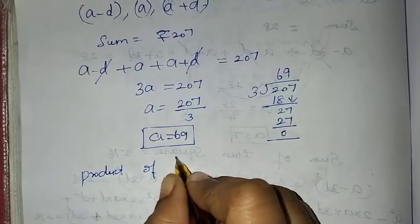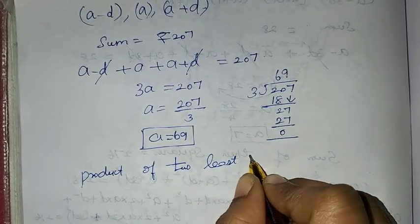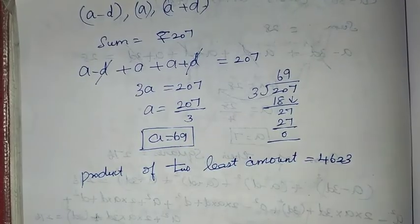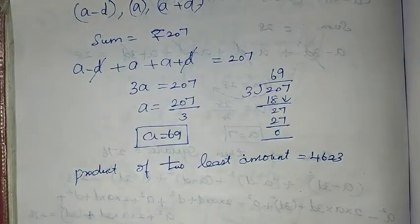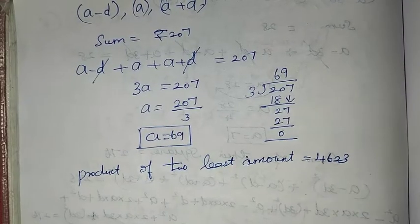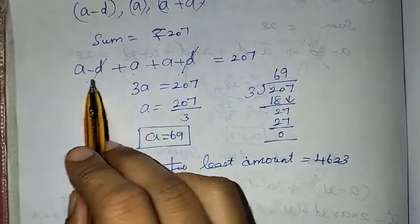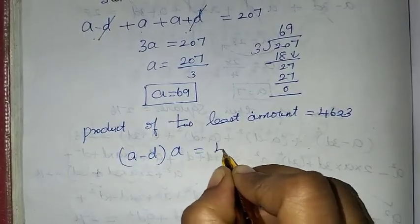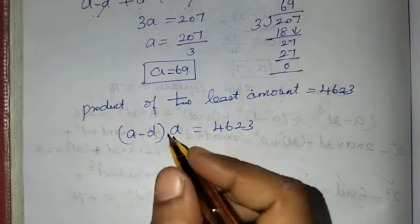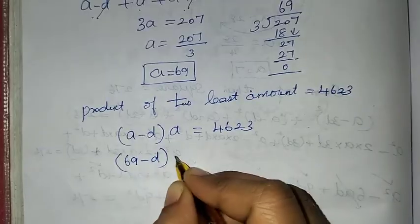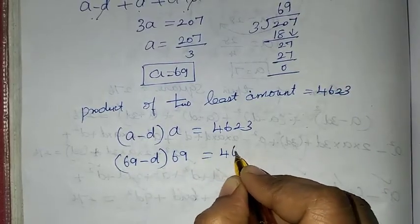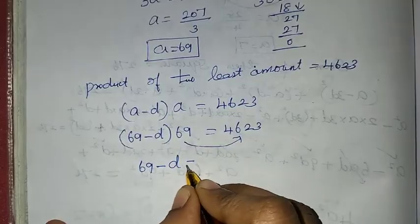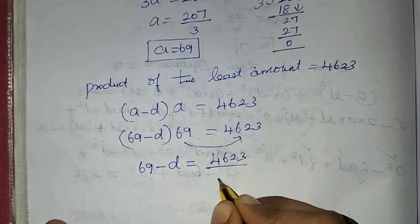Next, the product of the 2 least amounts equals 4,623. The 2 least terms are (a - d) and a. So (a - d) × a = 4,623. Substituting a = 69: (69 - d) × 69 = 4,623.